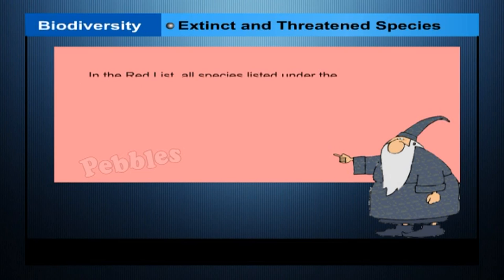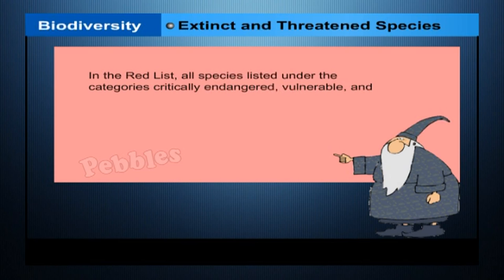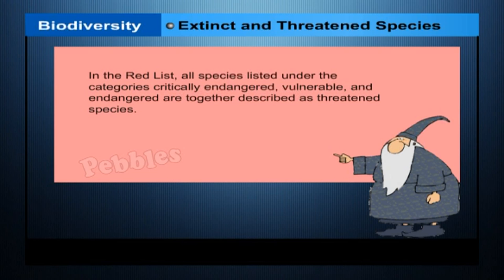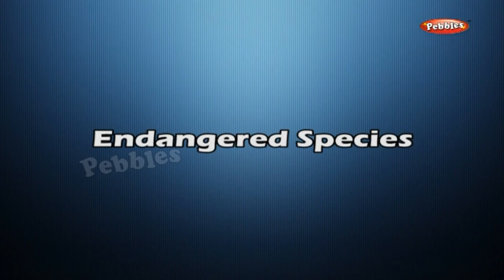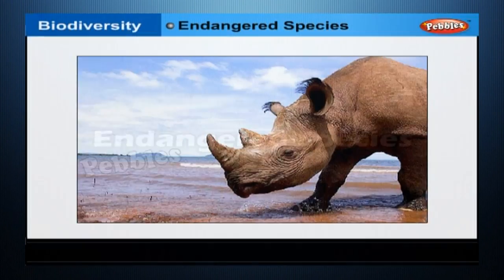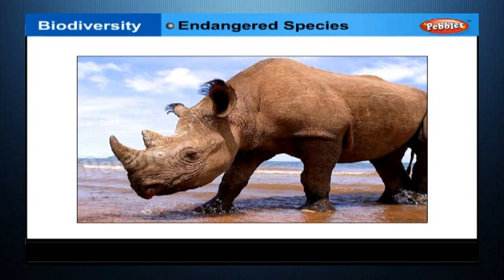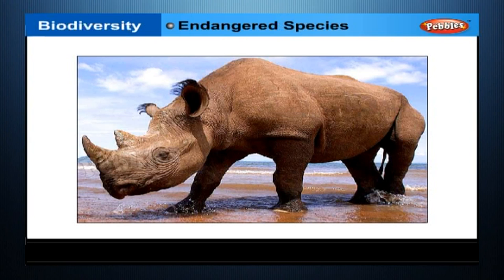In the red list, all species listed under the categories Critically Endangered, Vulnerable and Endangered are together described as threatened species. Species that are at a high risk of getting extinct in their habitat are also called endangered species.